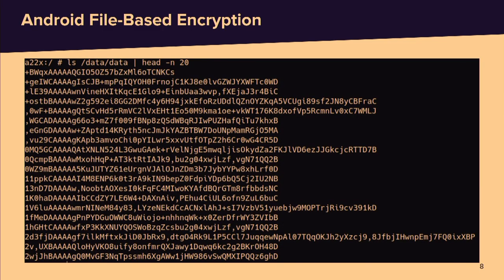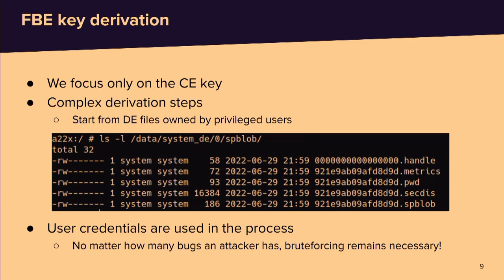To give a clearer picture: /data/data is where applications store user data. Before you authenticate, file names are encrypted — it's all garbage. Some files in another folder are device encrypted, and these are the files used to derive the actual credential encrypted key. Credentials — pin, password, or pattern — are actually combined in this process. So no matter how many bugs an attacker has, we still need to brute force to get the final key.